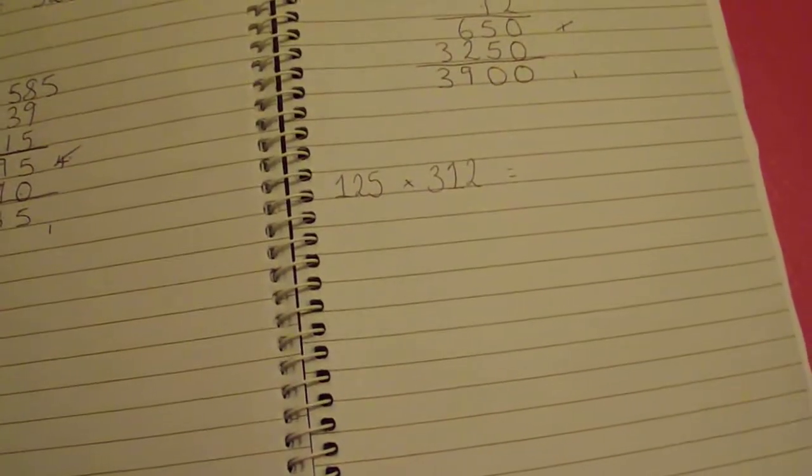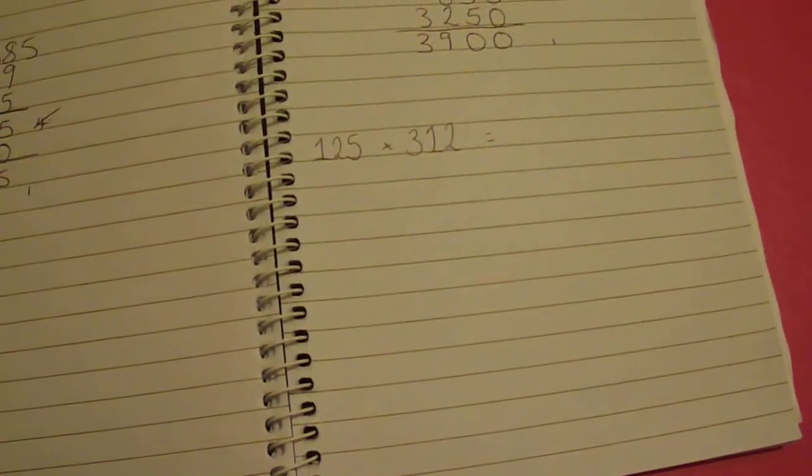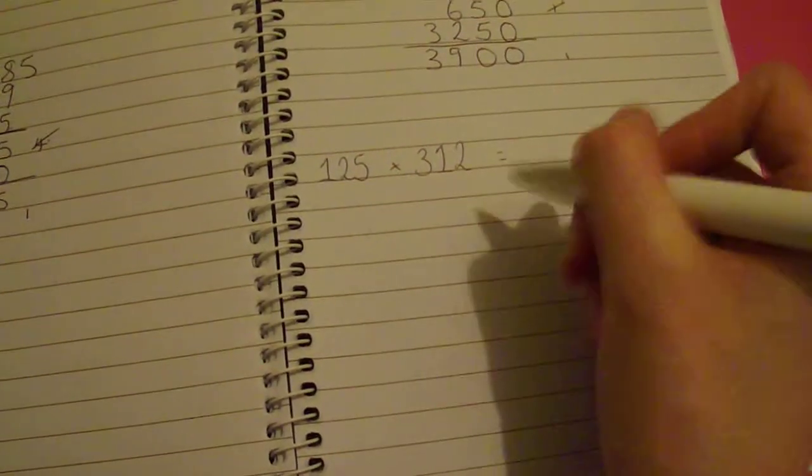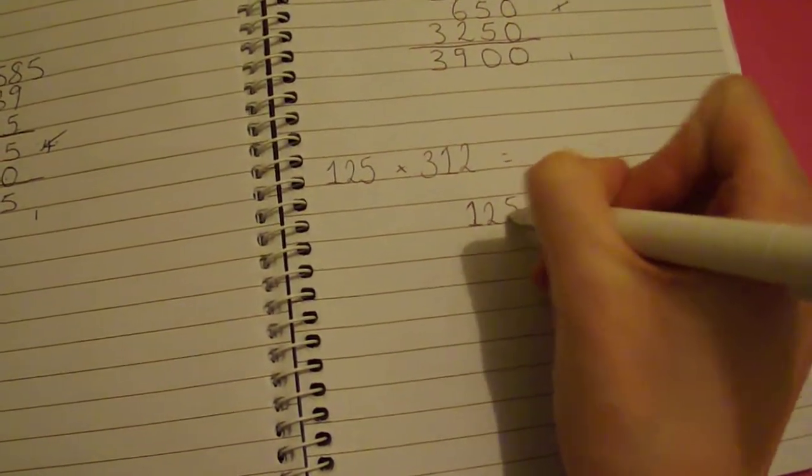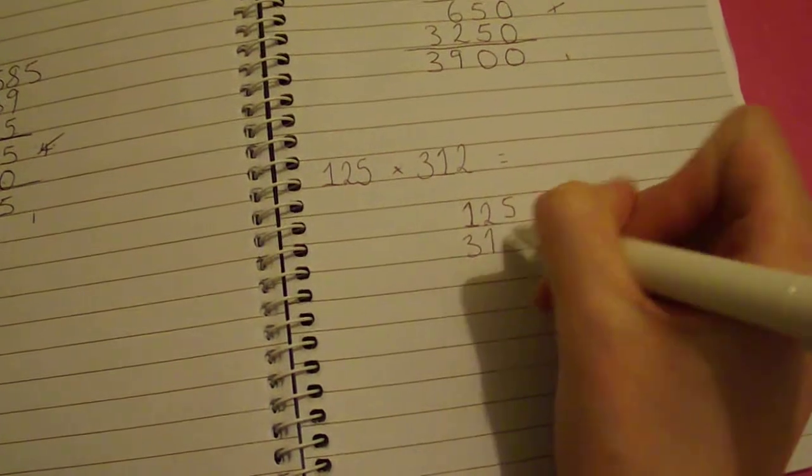This one, 125 times 312. So again, working with even bigger numbers this time. So you've got 125, 312.